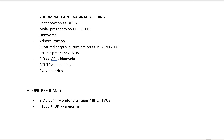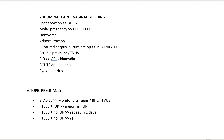If beta HCG is more than 1500 and there is no intrauterine pregnancy, repeat the beta HCG in two days. If beta HCG is less than 1500 and there is no intrauterine pregnancy, repeat in two to three days.